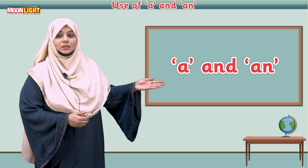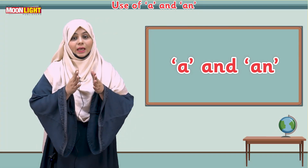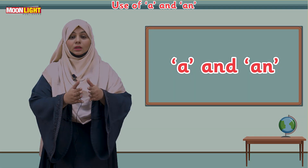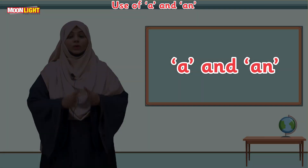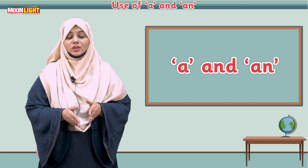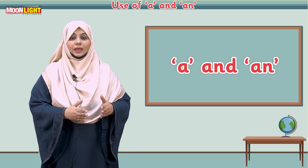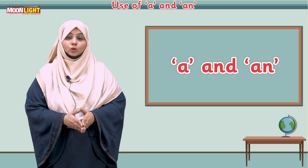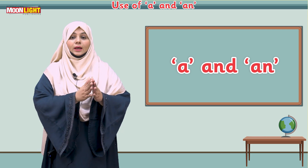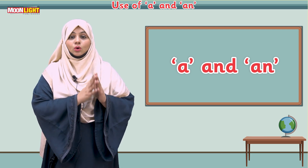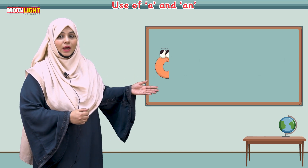This is 'a' and this is 'an' — 'a' and 'an' are the articles. Today I will tell you where you can use them. We use these articles with a singular noun — with a singular thing. If there is any one thing, we will use 'a' or 'an'. Earlier we read about consonants and vowels.